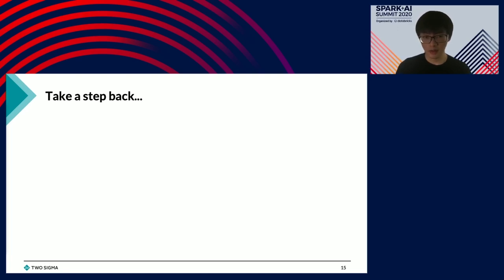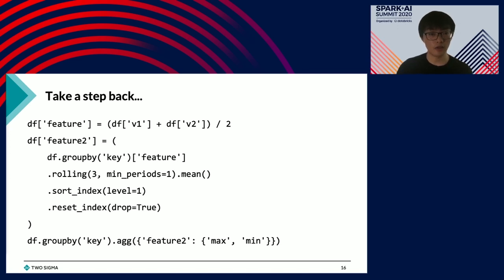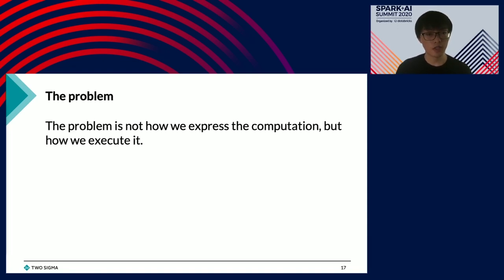We've looked at three approaches — they all have advantages and solve subsets of the problem, but none seems to be a silver bullet. To get a new perspective, let's step back and rethink. Looking at our previous Pandas code, the code itself is actually fine — it's reasonable to express what it's trying to do. We just want it to run faster or handle larger data. So the problem is not how we express the computation, but how we execute it. Yet two out of three approaches we looked at involve changing the expression, not the execution — which seems a bit strange.